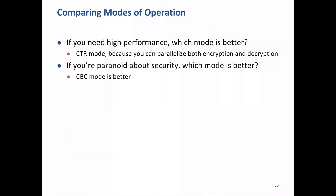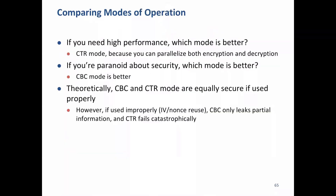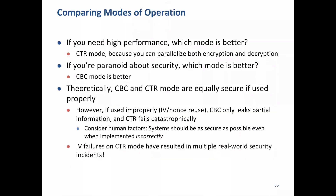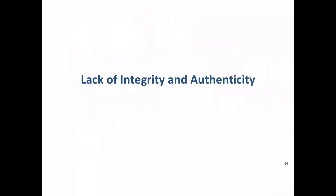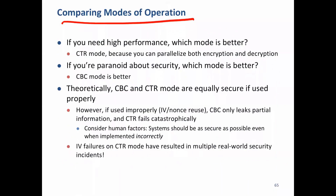To summarize: ECB mode is deterministic and not IND-CPA secure. CBC mode brings in randomness using an IV and is IND-CPA secure, but encryption cannot be parallelized — only decryption can. CTR mode solves this by using a nonce incremented per block, inspired by one-time pad, allowing both encryption and decryption to run in parallel. AES-CTR is IND-CPA secure provided the nonce is randomly generated and never reused; reusing the nonce is equivalent to reusing keys in one-time pad. You can compare these modes using the provided summary table.